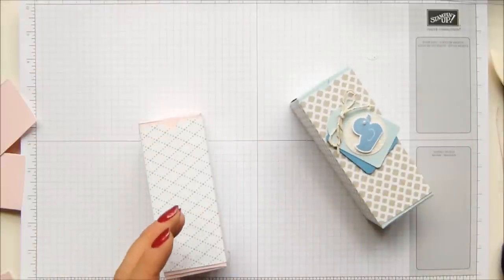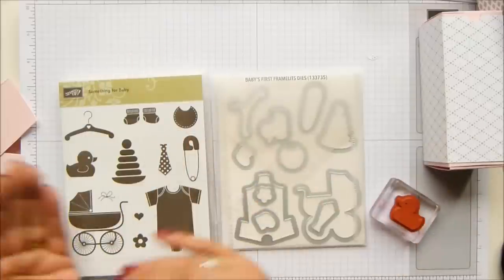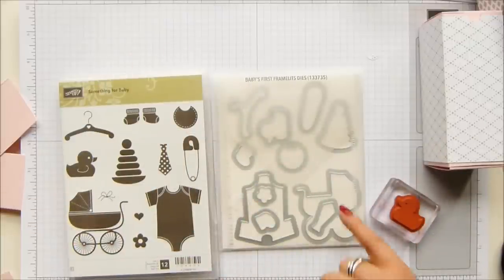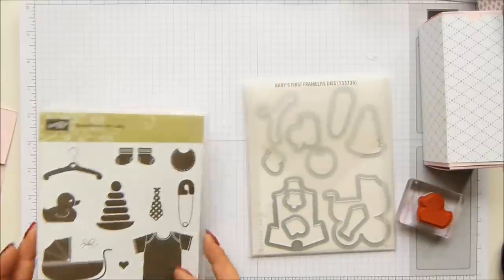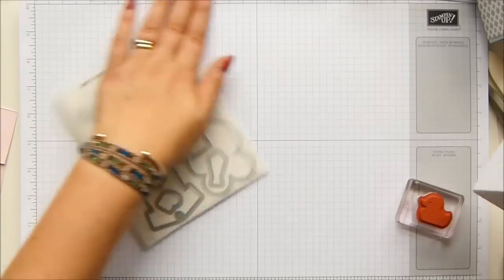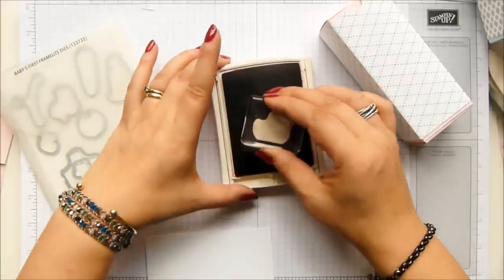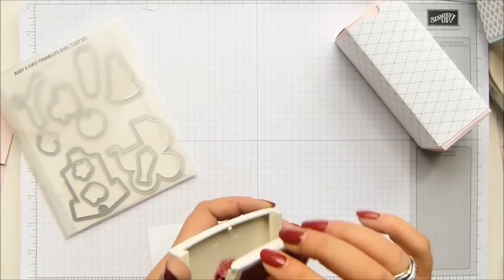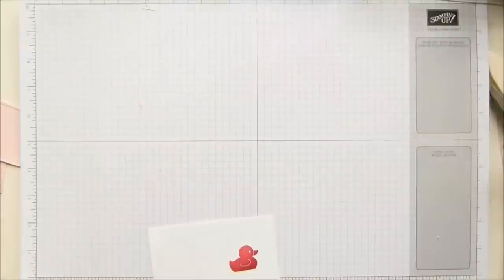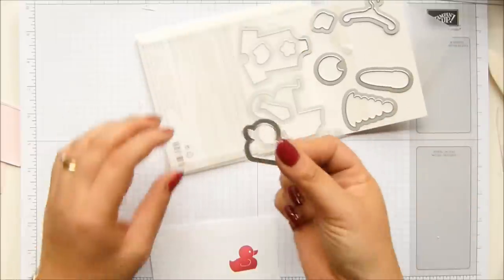I have got my beautiful Something for Baby stamp set and the matching framelits, Baby's First framelits. All go with this, so you can even cut out your beautiful pram with the framelit or the tie or the nappy pin, whatever, but I'm going with the duck. To complement the lovely pink pirouette, I've got rose red. I thought it was a bit different, so I've got it already prepped on my block. You're going to have to trust me for a second, but I'm doing big shot work off camera to the left.